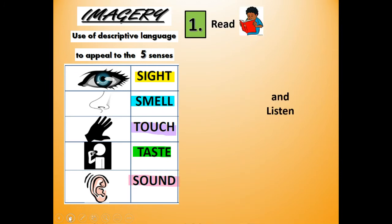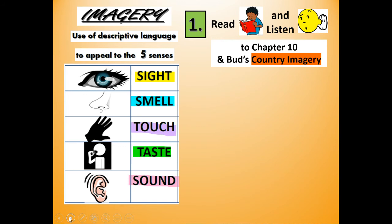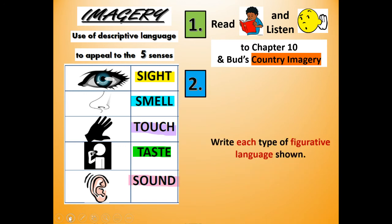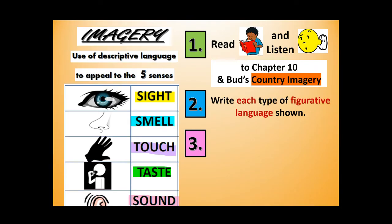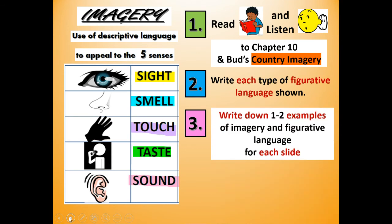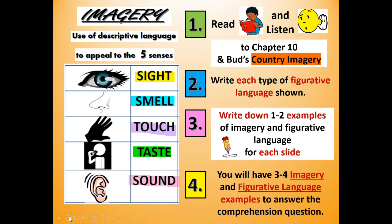You're going to read and listen to chapter 10 and Bud's country imagery. Then you're going to write each type of figurative language shown — actually write down the name. Is it a simile or is it a metaphor? What type of figurative language does he use? Then write down the example. Write one to two examples for each slide, and finally you will have three to four imagery examples to choose from to answer the comprehension question.